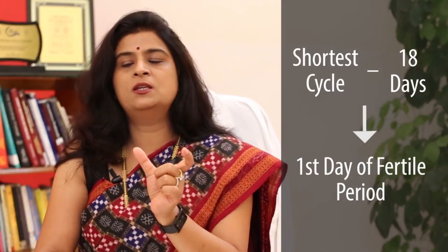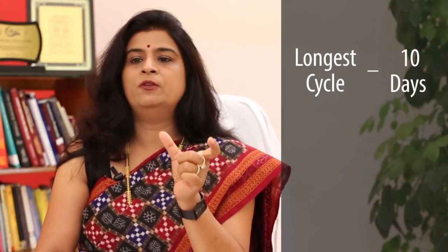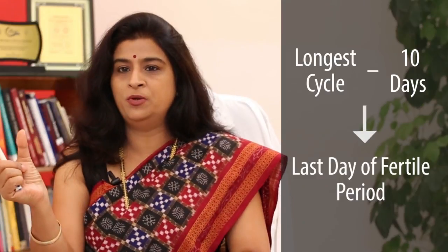There is a simple way of calculating your fertile period. Take the shortest cycle you have, suppose 26 to 27 days — subtract 18 days from it and you get the first day of your fertile period. Then subtract 10 days from the longest cycle and you get the last day of the fertile period.